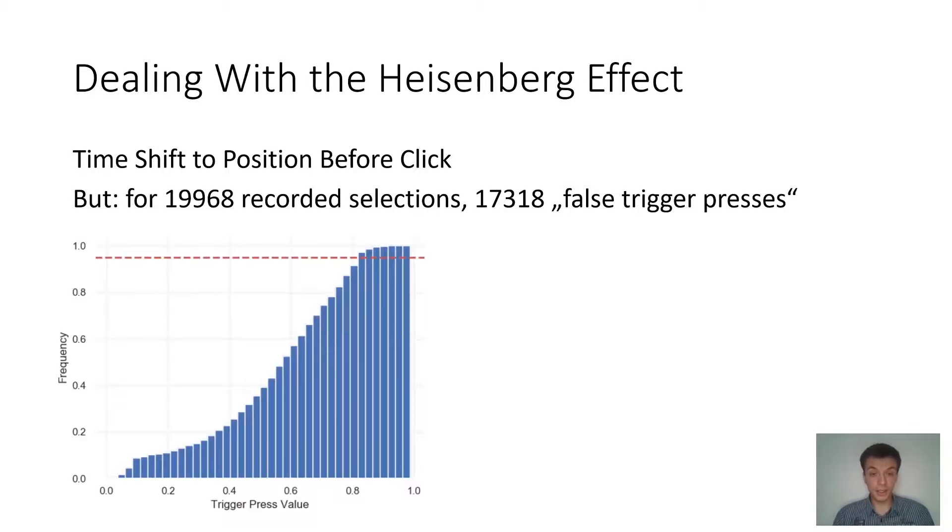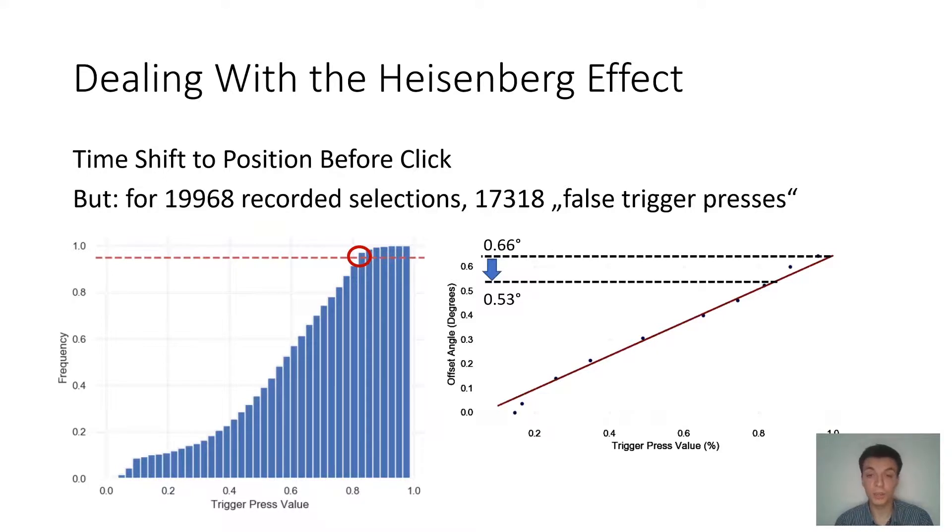If we look at the cumulative histogram of the false trigger presses, we can see that 95% of them happened for a trigger press value below 0.83. So if we accept this trigger press value and we go back to our trigger press value relationship with the offset, we can see that we could go from a displacement of 0.66 degrees down to 0.53 degrees.